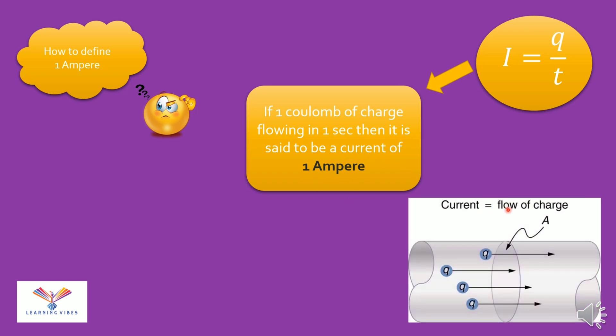Again from this diagram we understand that 1 Coulomb of charge is flowing from this section to this section in 1 second. That means we can say that a current of 1 ampere is flowing from this conductor. Even from this we can define ampere in other words. Ampere is equal to Coulomb per second. So the unit ampere is equal to Coulomb per second.